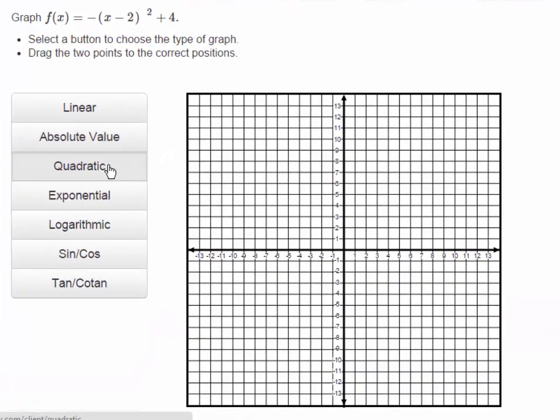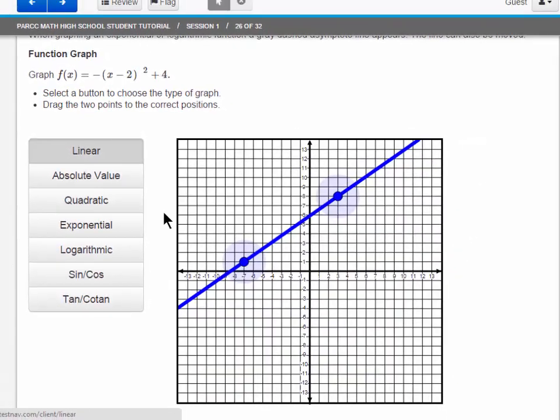Clicking on the quadratic button will pull up a quadratic graph. I can move the points as I wish to adjust the graph however I desire. Clicking on a logarithmic graph will do the same thing. I can adjust the points as desired. A simple linear graph works in the exact same fashion. Try this out. Let's move on to the next tool.